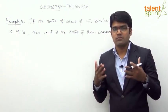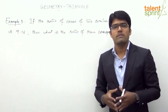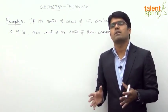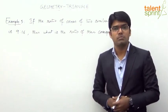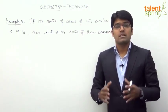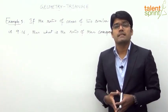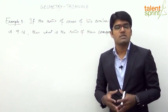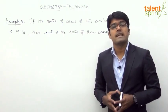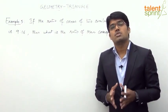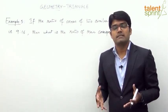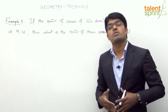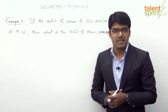If you have got the right point with you, you will be able to mark the answer for this question without putting anything on paper. The key property of similar triangles is that the ratio of their areas is equal to the ratio of the squares of their corresponding sides.